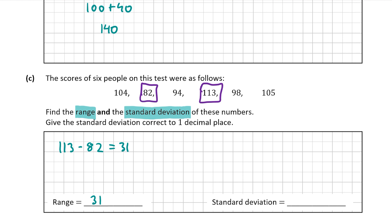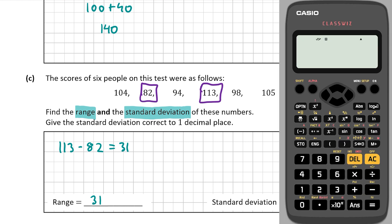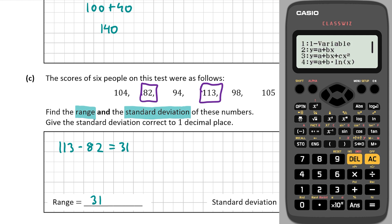Now let's find the standard deviation using the calculator. I recommend following along on your own calculator. Put your calculator into statistics mode by clicking Menu, then 2, then 1 — you should see an x column with rows numbered down the left. Now type in the numbers: 104, 82, 94, 113, 98, and finally 105.